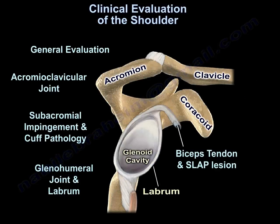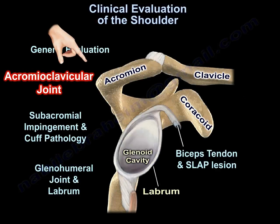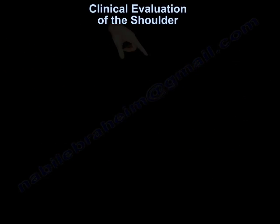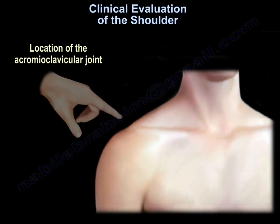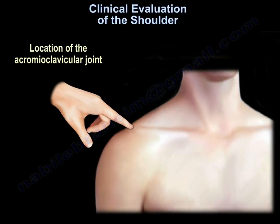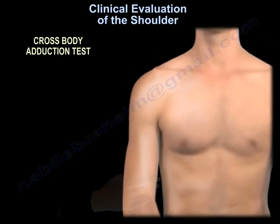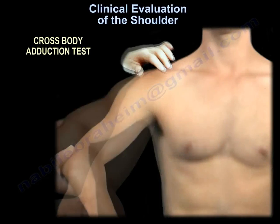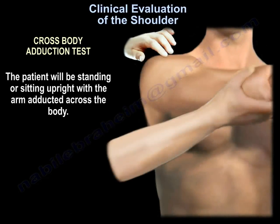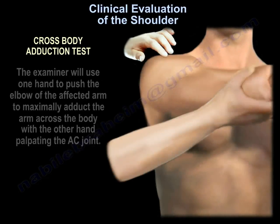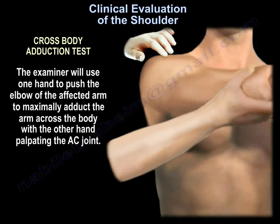Moving to the acromioclavicular joint, we use certain tests such as the cross-body adduction test. The patient stands or sits upright with the arm adducted across the body. The examiner uses one hand to push the elbow of the affected arm to maximally adduct it across the body, while the other hand palpates the AC joint.